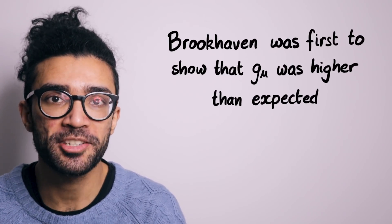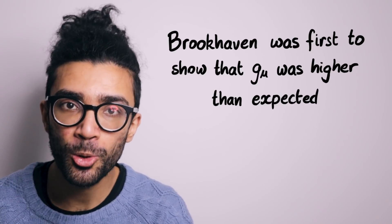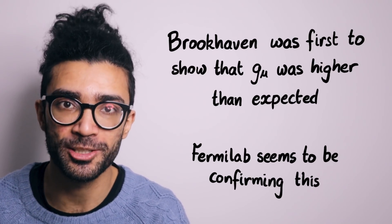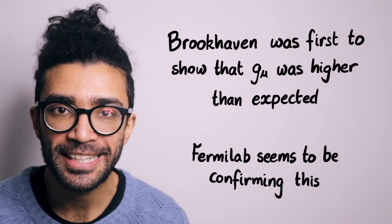And so the Fermilab experiment was essentially designed to either confirm this or refute that. And it turns out it seems to be confirming that the original experiment had it correct. Combining these two experiments is what's currently giving us a 4.2 sigma difference between the theoretical prediction and the experimental measurement.